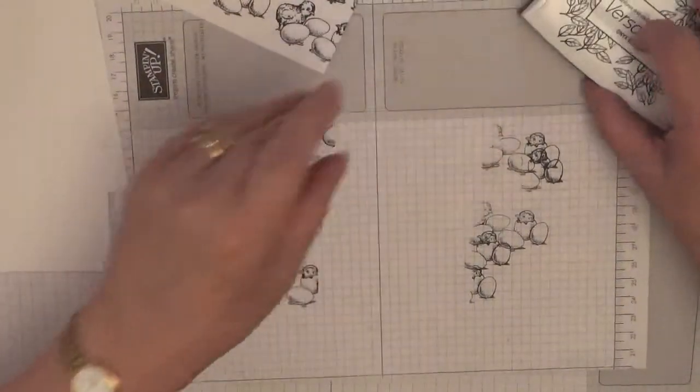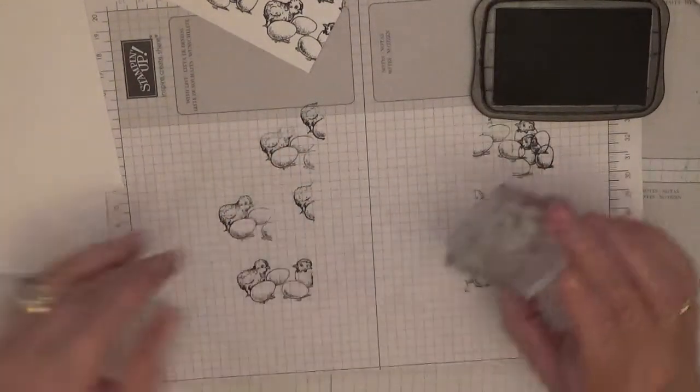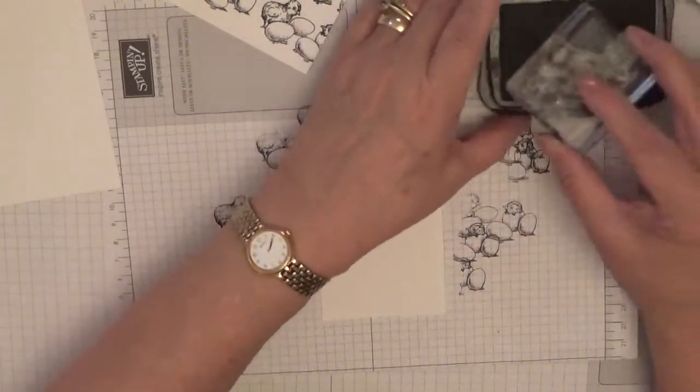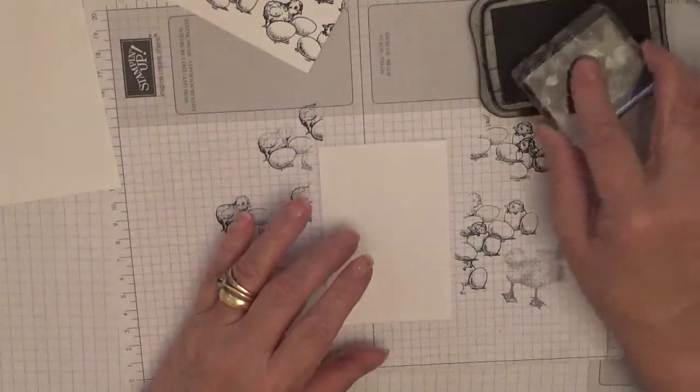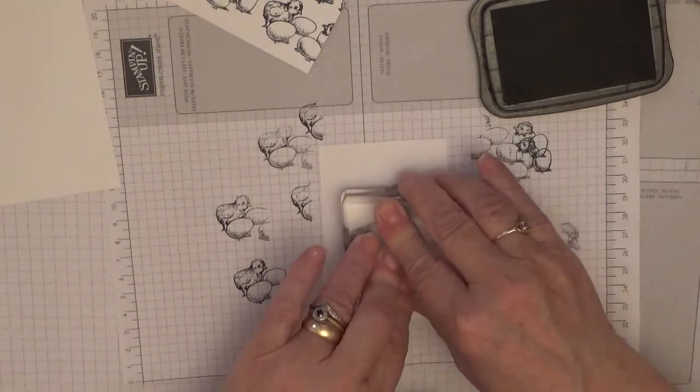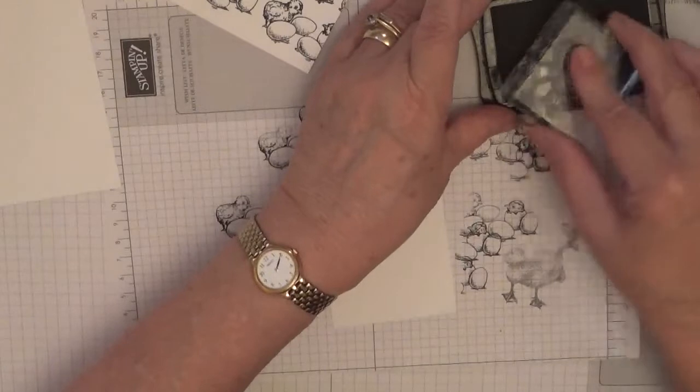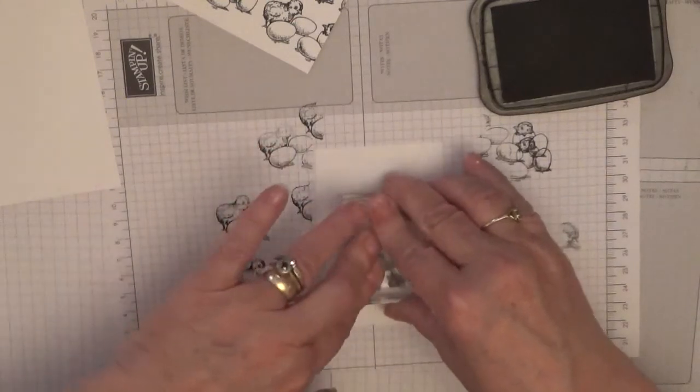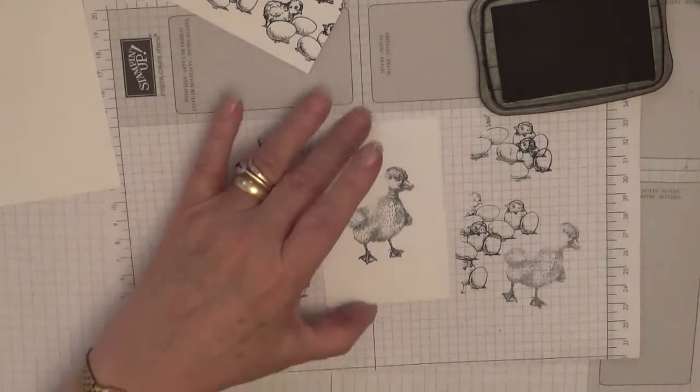For the duck I'm changing my ink. I'm going to use Memento black. The reason being, this is heavily shaded and if you use the Versafine it nearly comes out black, so I'm using this because it will come out a lot lighter so you can color it in.